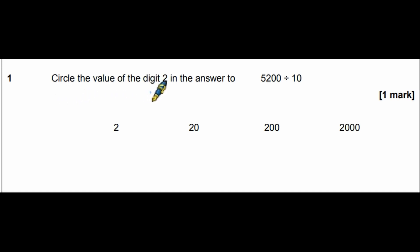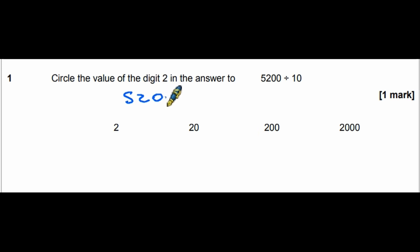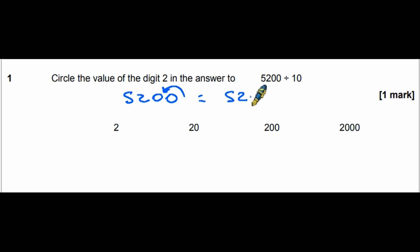Question one asks us to circle the value of the digit 2 in the answer to 5200 divided by 10. We take the decimal point and move it one place to the left, so our answer is 520. The 2 is in the tens column, therefore its value is 20.